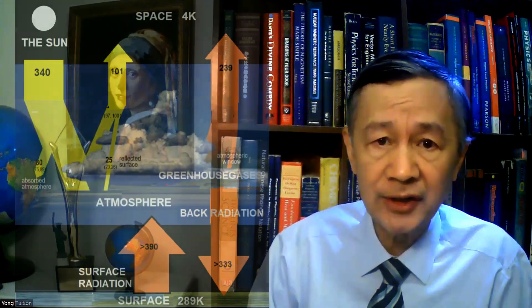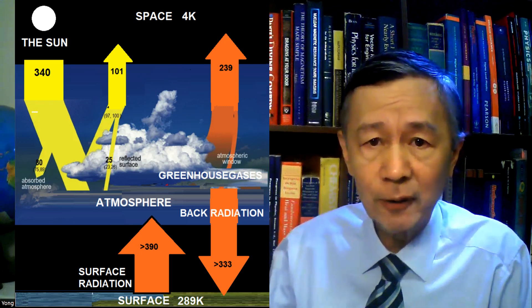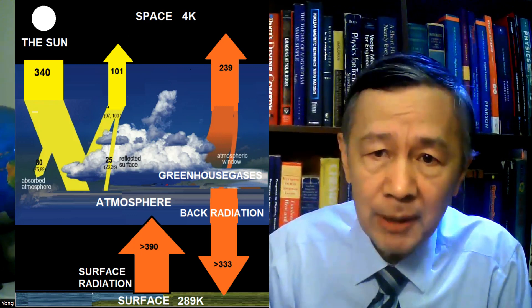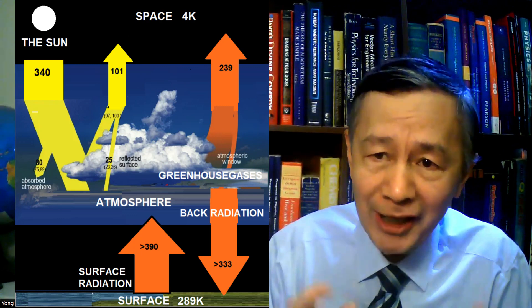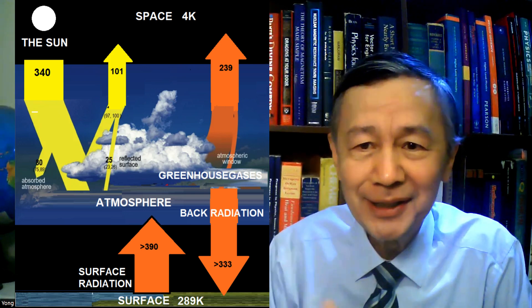This appears to be the most absurd part of the greenhouse effect hypothesis. If the back radiation from those trace gases is as strong as the solar radiation at the top of the atmosphere, as shown in this diagram, why don't people design a thermal engine to harvest or harness the back radiation near the surface day and night? This could solve humans' energy supply problems once and for all.